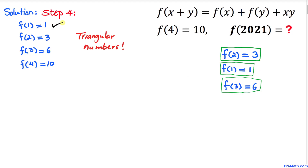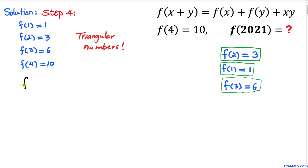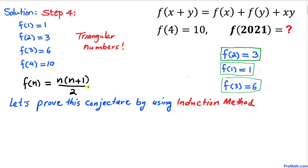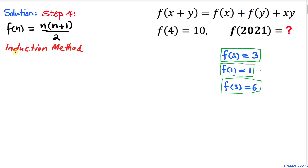So far we have figured out: f(1) = 1, f(2) = 3, f(3) = 6, f(4) = 10. These are called triangular numbers. So we can write the formula as f(n) = n·(n + 1) / 2. Now we are going to prove this conjecture using the induction principle.